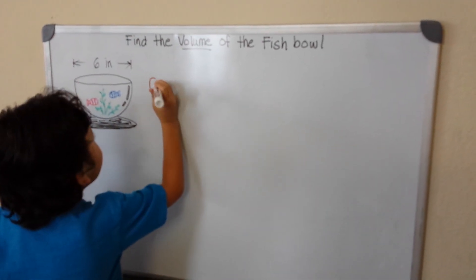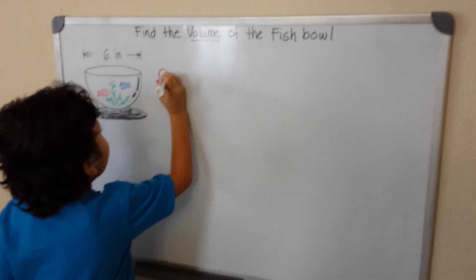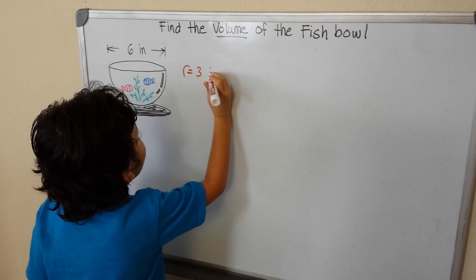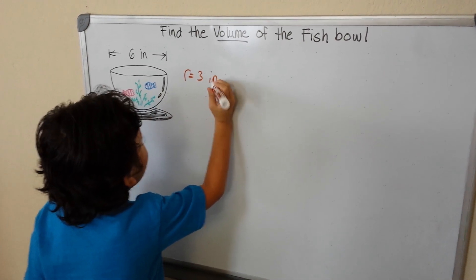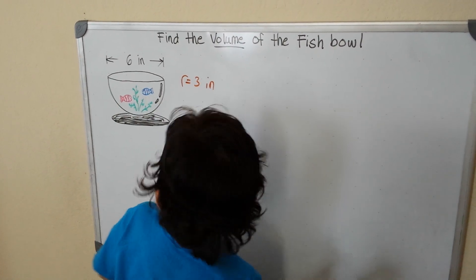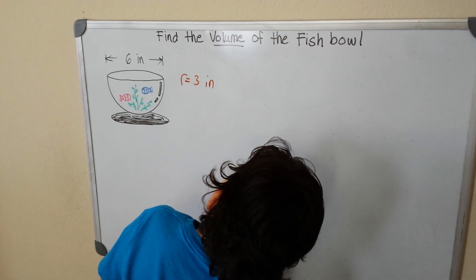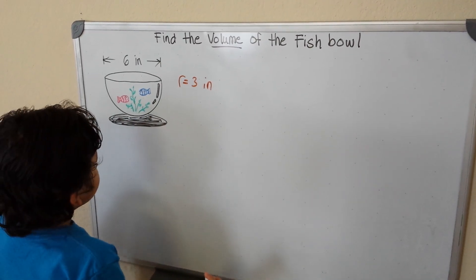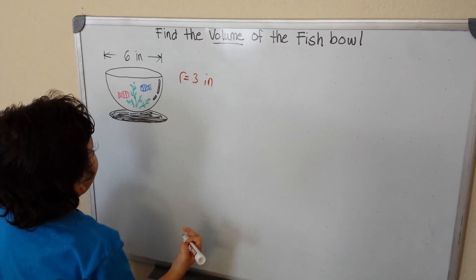So our radius is equal to 3 inches, because 6 divided by 2 is 3.